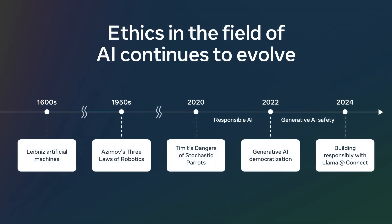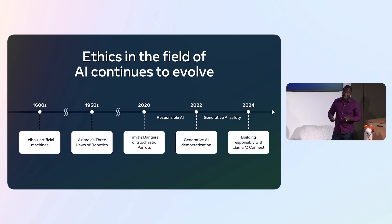This particular line of work started early on. If you look at the early work of Leibniz on artificial machines and ethics, all the way to Asimov's Three Laws of Robotics in the 1950s, to more recently in 2020, Timnit's papers on the dangers of stochastic parrots — that field has continued to evolve and morph and adapt to the technological landscape at hand.